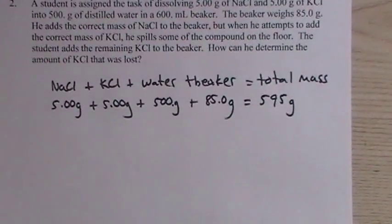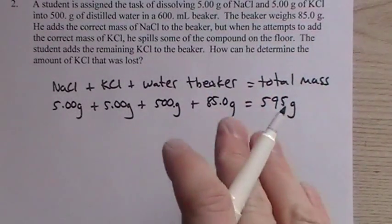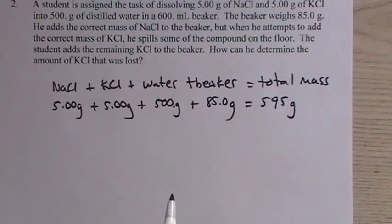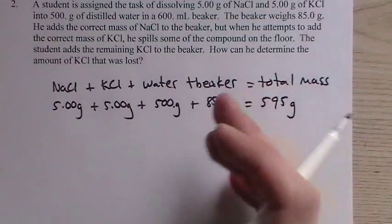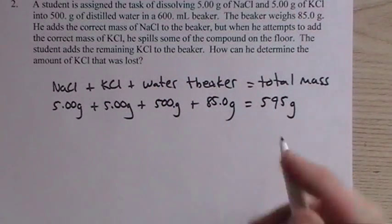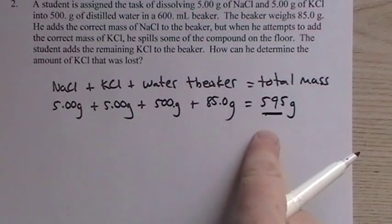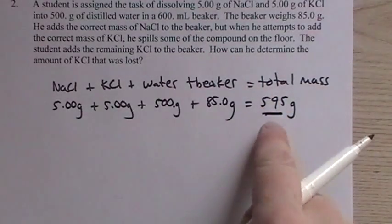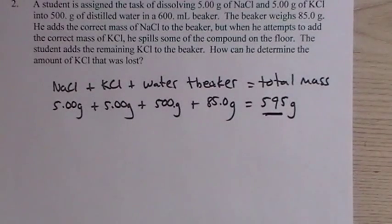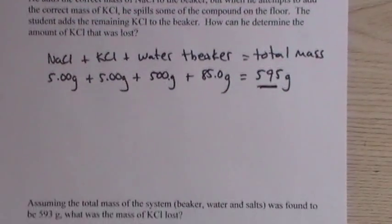But we know that the student lost some. So if we, but the rest of the KCl, lost some of the KCl, and the rest of the KCl went in, along with everything else. So if he were to weigh what he has, what he would find is a mass less than this, because he lost some of the KCl. But by difference, we subtract what he found finally on the balance, subtract it from 595, that has to be the mass of the missing KCl. The law of conservation of mass says it must be.